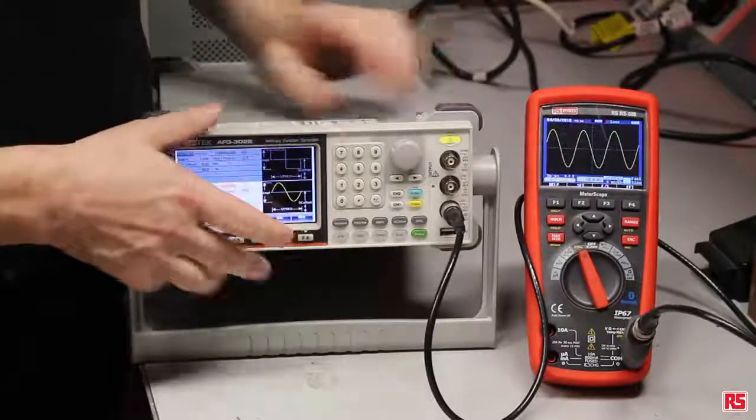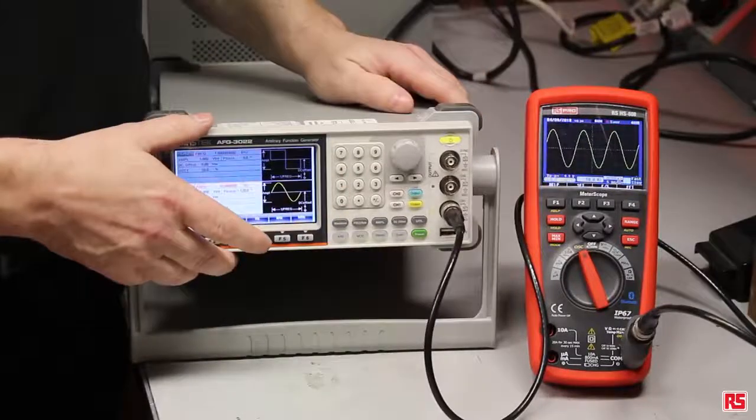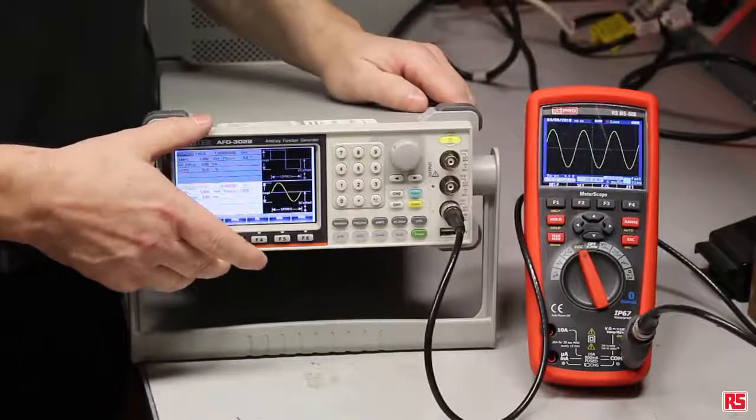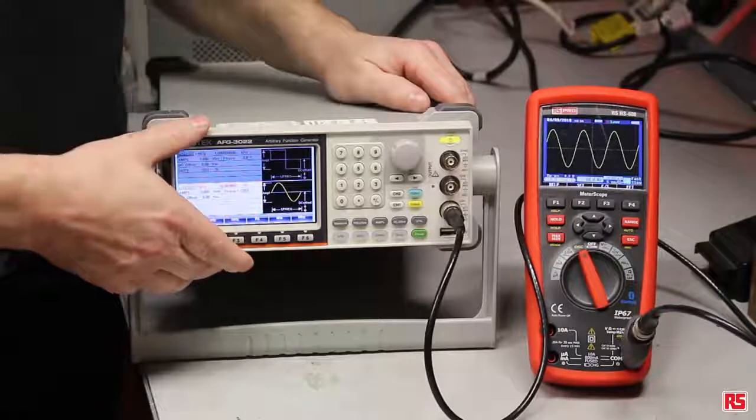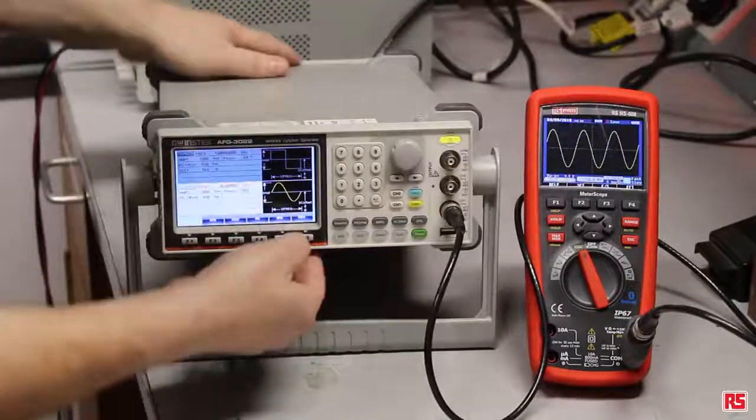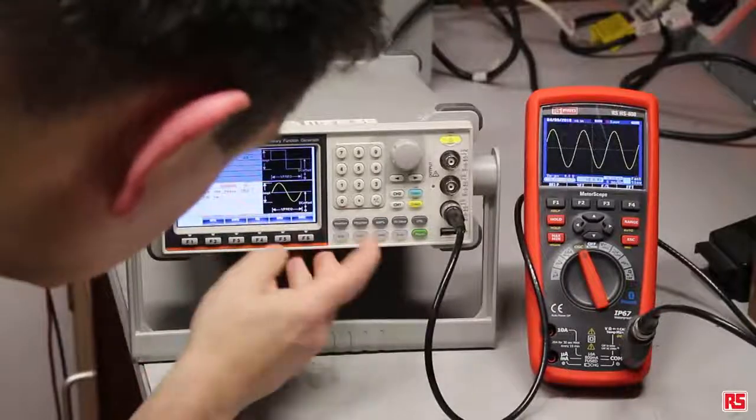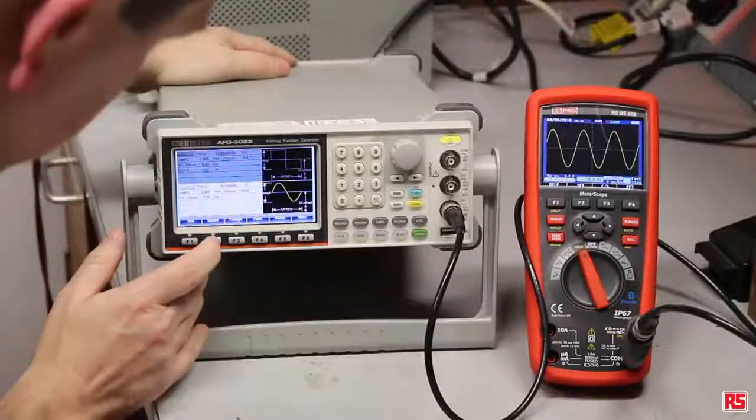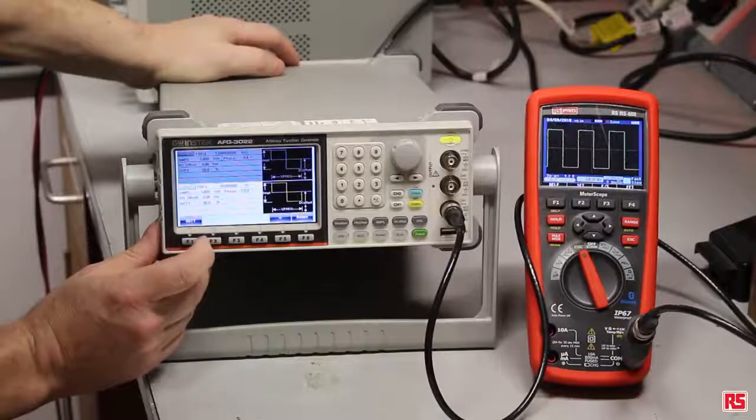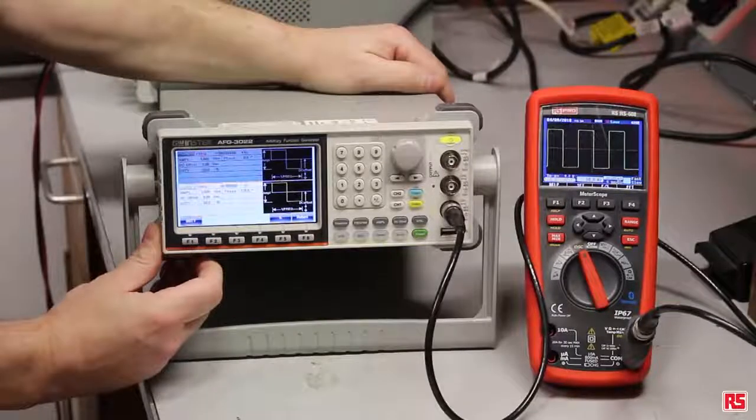So if I use the function generator just to manipulate it a bit, you'll see that there's some kind of response on the actual meter scope itself. So let's just change the waveform. I'll select a square wave and you can see how quickly it changed.